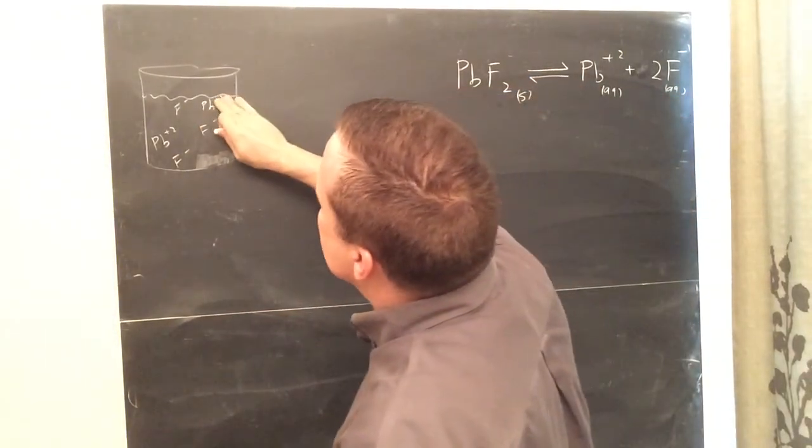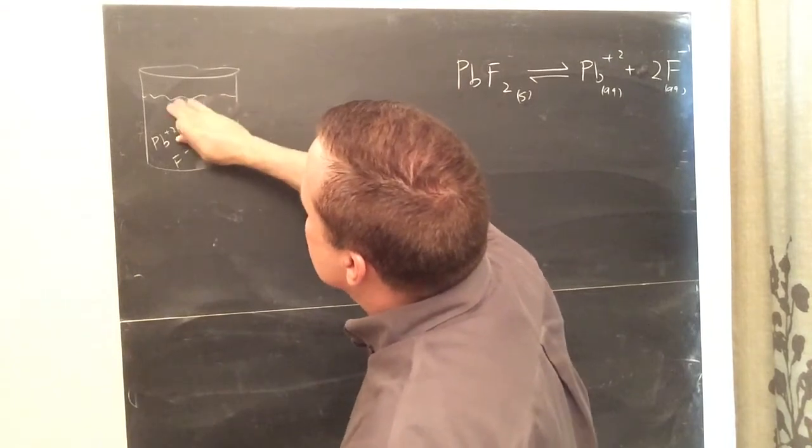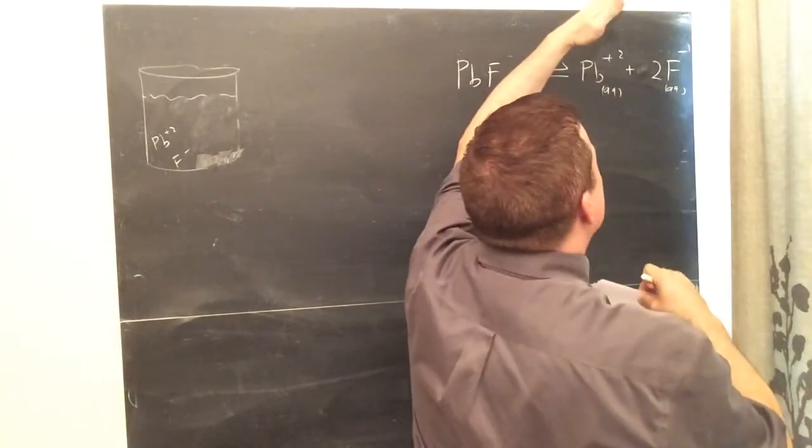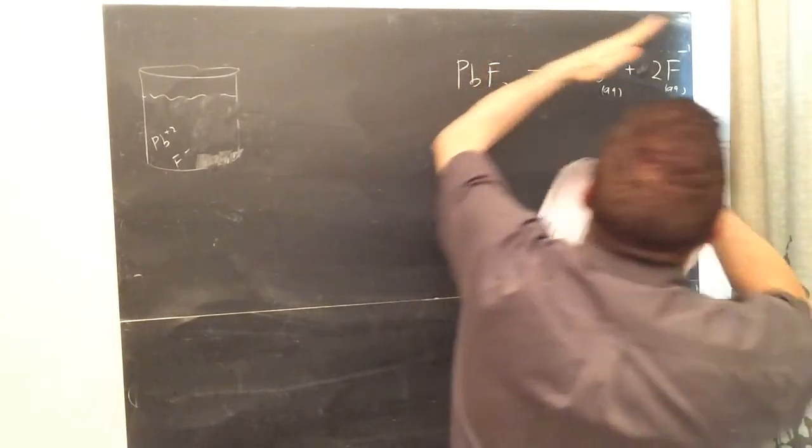Remember, if I take away this, F, and Pb, just say if I take those all away, well, suddenly, if I take those away, boom, I'm out of balance. And so that means it's going to have to shift to the right.